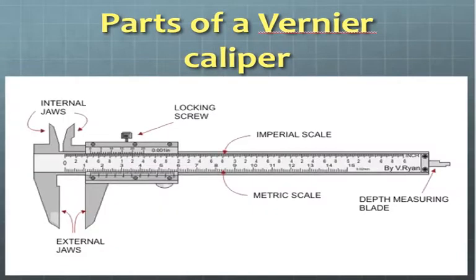Thus, the main parts of a vernier caliper are internal jaws, external jaws, main arm, sliding arm, depth measuring probe, and locking screw.